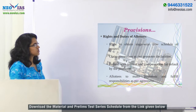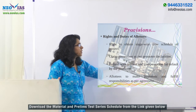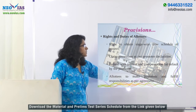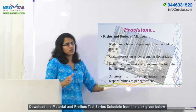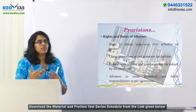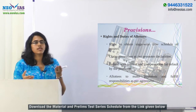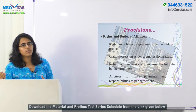The act also provides certain rights and duties to the allottees. Allottees have the right to obtain the stage-wise time schedule of the project, claim possession as per the promoter's declaration, and receive a refund with interest and compensation for default by the promoter. Allottees also have to make payments and fulfill responsibilities as per the agreement. In case of default by either the promoter or the allottee, the interest charged will be the same — resolving the unequal relationship between the promoter and the buyer.